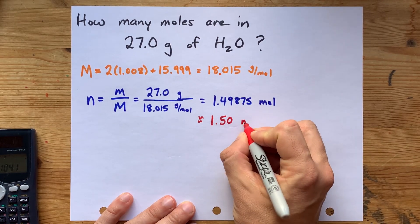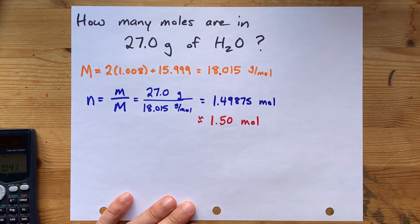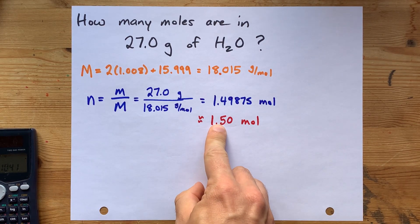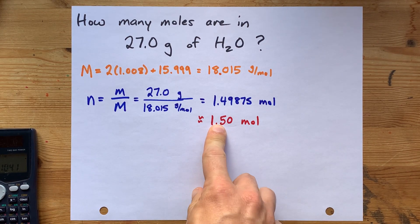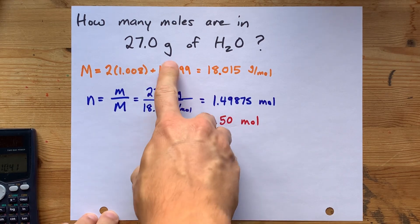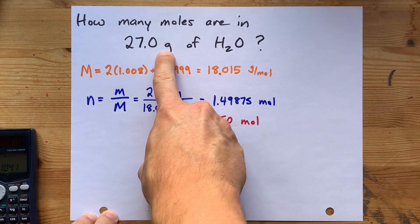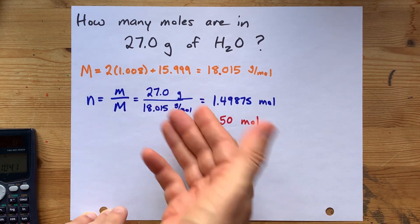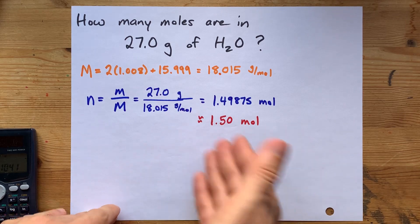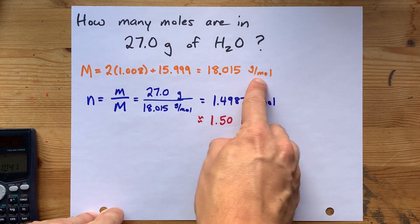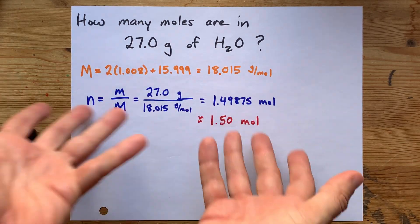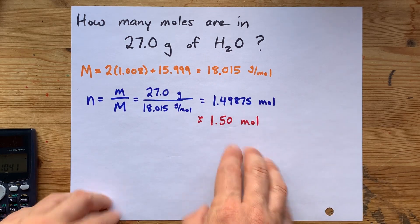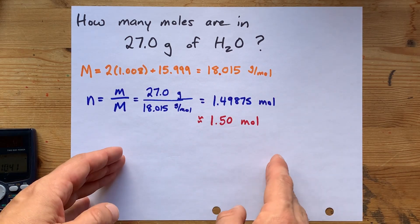And that's actually it. 1.50 moles. Three significant figures. You got moles from grams by dividing by molar mass. It's a little more work than it sounds like because you have to calculate the molar mass yourself to start with. But hey, here we are, together, solving problems.